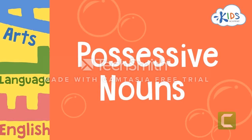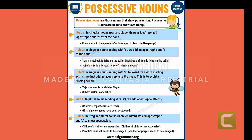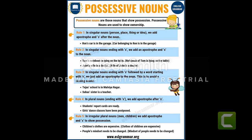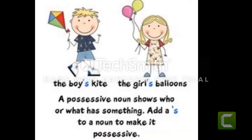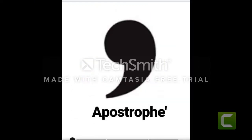Children, what are possessive nouns? Words that show possession or ownership are called possessive nouns. They are written by adding an apostrophe and an S.